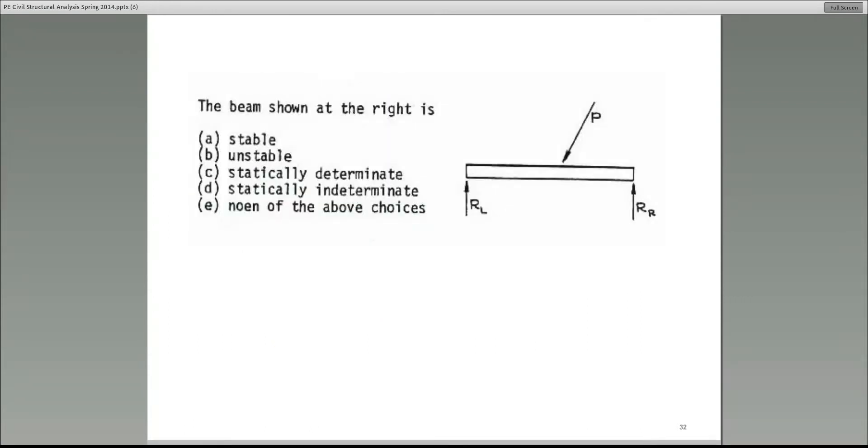I have a series of problems here that are similar to what have shown up on some tests. In this case, the beam shown at the right is what? By the way, this choice E is none of the above choices. Steven says this is unstable, several of you are saying unstable, you're correct. This is unstable because this load P that you can see is acting at an angle. Therefore, that has a reaction in the X direction, also one in the Y direction. The supports are not providing any reaction in the X direction, therefore that is unstable.